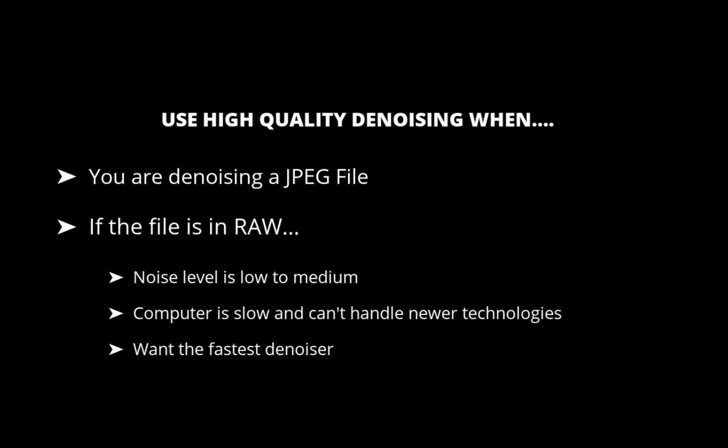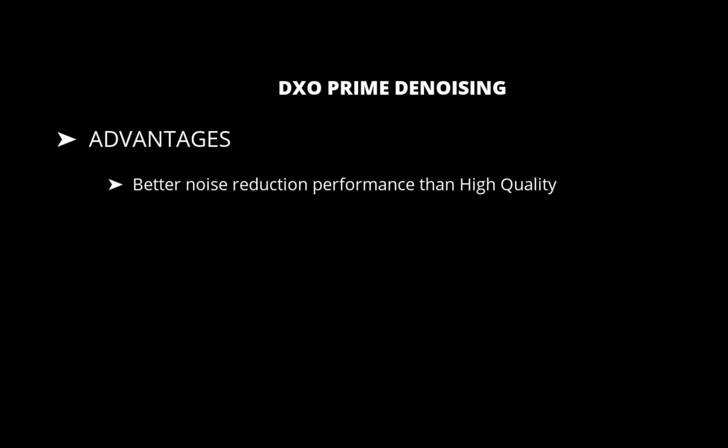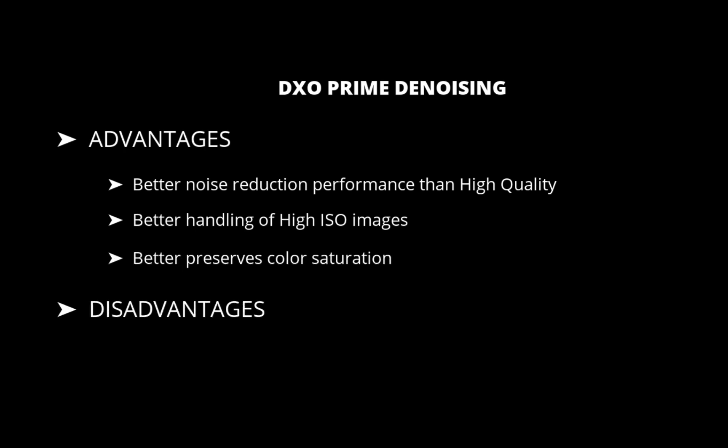Let's move on to the next denoising technology: DxO Prime. Prime stands for Probabilistic Raw Image Enhancement. According to DxO, the advantages of Prime include better noise reduction with vibrant colors, no aberrations, and perfectly preserved details. It takes advantage of the highest sensitivities offered by cameras — the higher the ISO sensitivity, the more perceptible the improvement over High Quality mode. It also better preserves color saturation. Its disadvantages: Prime only works with RAW and does not support JPEG. It is also unable to display results in real-time in the image viewer, because Prime implements complex algorithms that require a lot of computing power. To preview the result for the entire image, you have to export the image.